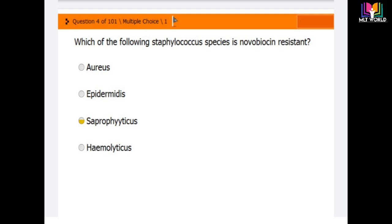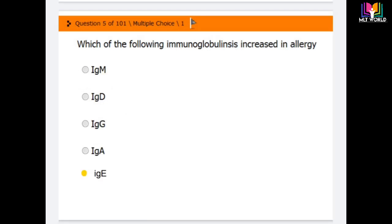Next question: Which of the following immunoglobulin increases in allergy? Options are IgM, IgD, IgG, IgA, and IgE. The correct answer is IgE. Immunoglobulin E will increase in the case of allergy.